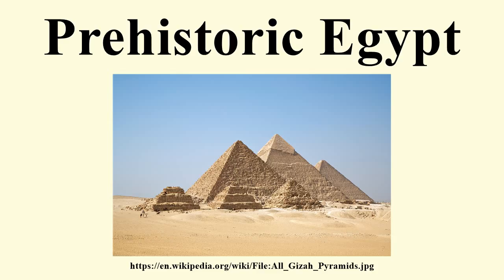Aterian tool-making reached Egypt c. 40,000 BC. The Khormusan industry in Egypt began between 40,000 and 30,000 BC. Khormosans developed advanced tools not only from stone but also from animal bones and hematite. They also developed small arrowheads resembling those of Native Americans, but no bows have been found. The end of the Khormusan industry came around 16,000 BC, with the appearance of other cultures in the region, including the Germanic Mesolithic Halfan culture.